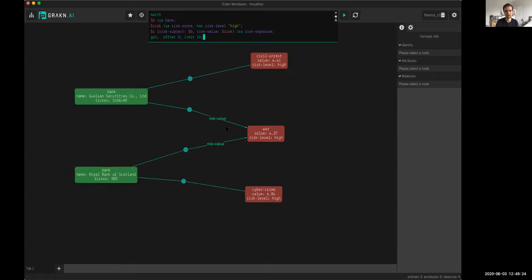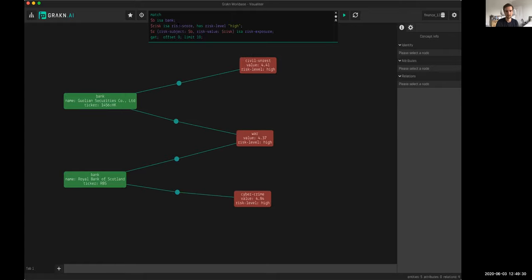We see that there's two banks, Wallian Securities and RBS, that are returned that are exposed to these three risk scores. This is already where we see some of the automated reasoning taking place because we asked for a risk score, but we were returned a civil unrest, a war score, and a cybercrime score. Those are subtypes of their parent, and their parent is risk score.